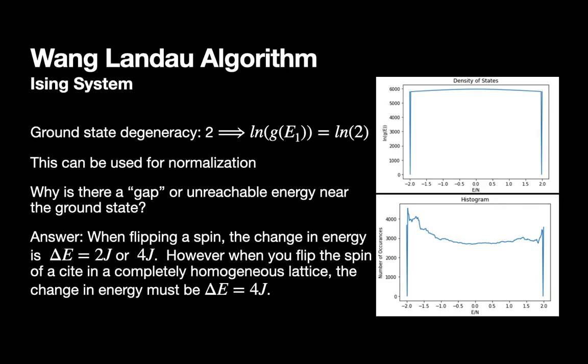We get this gap since the change in energy from a homogeneous lattice to one with one spin flipped the other way is twice the smallest change in energy of that of any non-homogeneous lattice. If we think of the system as having an energy density as opposed to just an energy, and it was truly infinite, this gap would not appear.